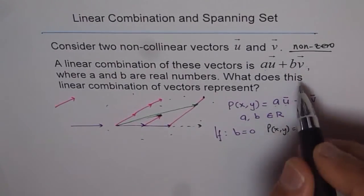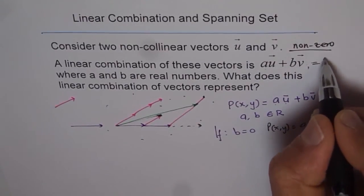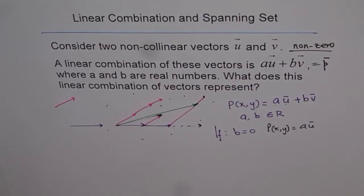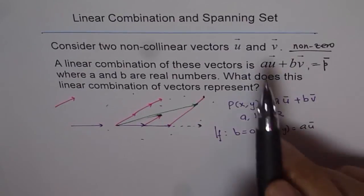Like au plus bv equals to any vector p in that plane. So that is what we understand by spanning set.